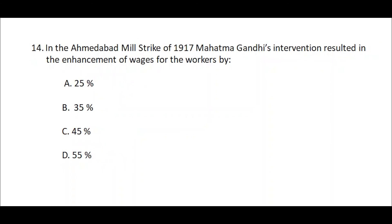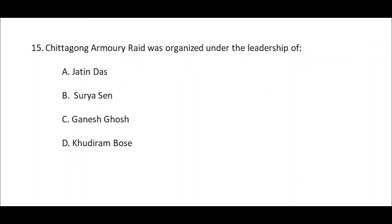Question number fourteen: In the Ahmedabad mill strike of 1917, Mahatma Gandhi's intervention resulted in the enhancement of wages for the workers by — option A: 25%, option B: 35%, option C: 45%, option D: 55%. The correct answer is option B — 35%.